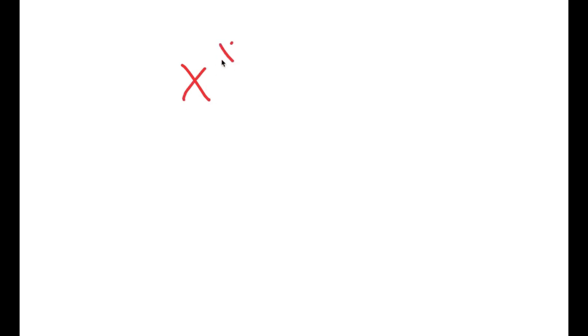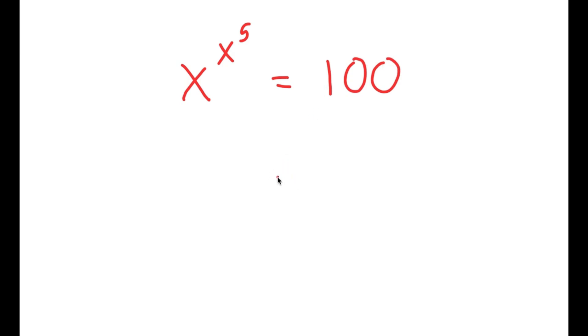In this video I'm going to solve the equation x to the power of x to the power of 5 is equal to 100. To solve this equation I'm going to first start by taking the power of 5 on both sides.